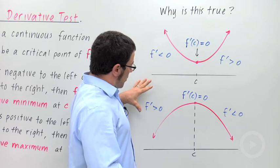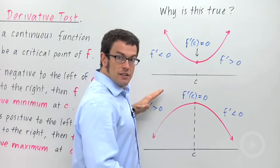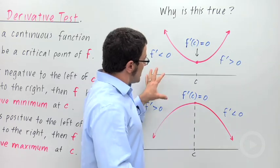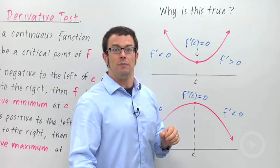So we'll be looking for the function to go from positive to negative. That indicates that it's going from increasing to decreasing. So that's why we get a relative maximum. This is called the first derivative test for relative maxima and minima.